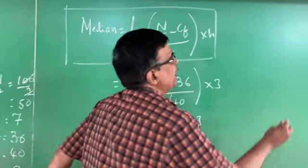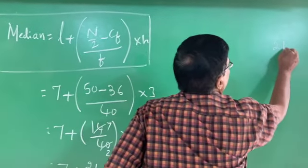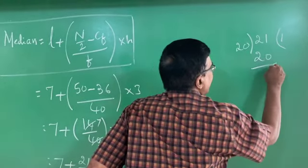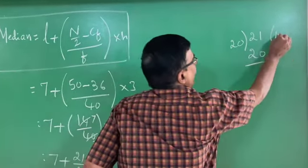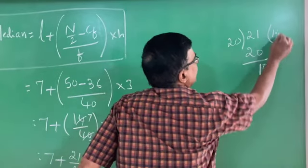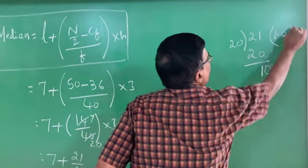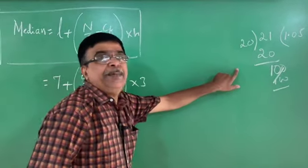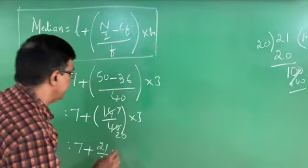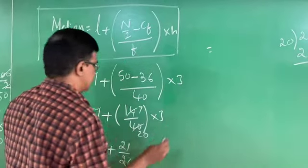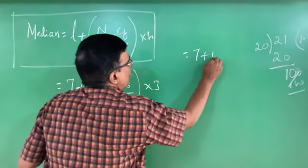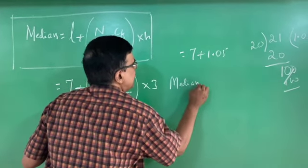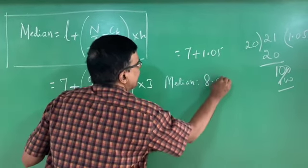Dividing 21 by 20: 21/20 = 1.05. Therefore Median = 7 + 1.05 = 8.05. The median number of letters in the surnames is 8.05.